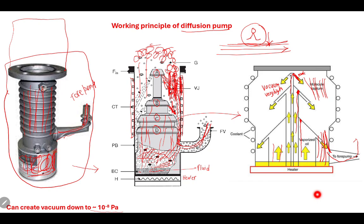This is how the diffusion pump works. There are other kinds of pumps that can also create high vacuum — for example, the cryo pump and the turbo molecular pump — and we will discuss those in the next video. If you want to know about the rotary vane pump, I will put the link to my previous video so you can check that out.